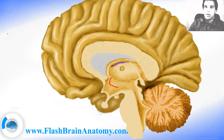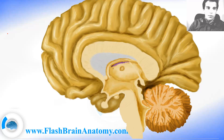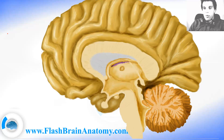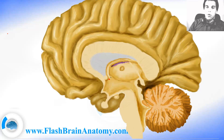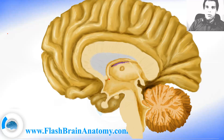The last part of the epithalamus is the habenular trigone. Then the subthalamus is caudal from the thalamus. Another part of the diencephalon is the thalamus itself, which also has more parts. The last, fourth part of the diencephalon is the hypothalamus. The border here is the subthalamic sulcus. And it includes the mammillary bodies, the infundibulum here, and the pituitary gland here.